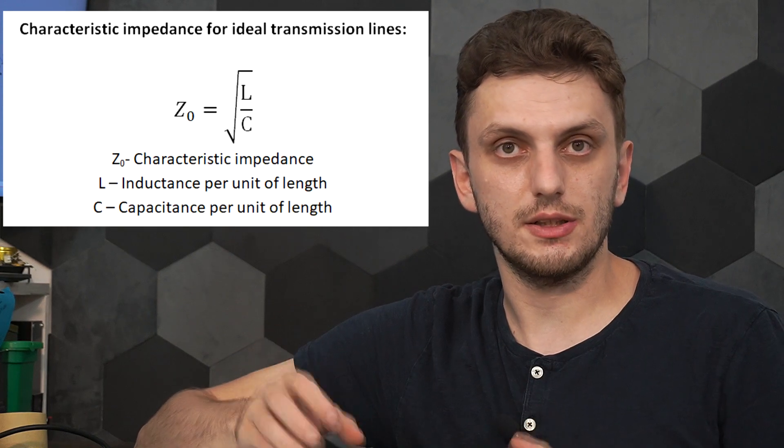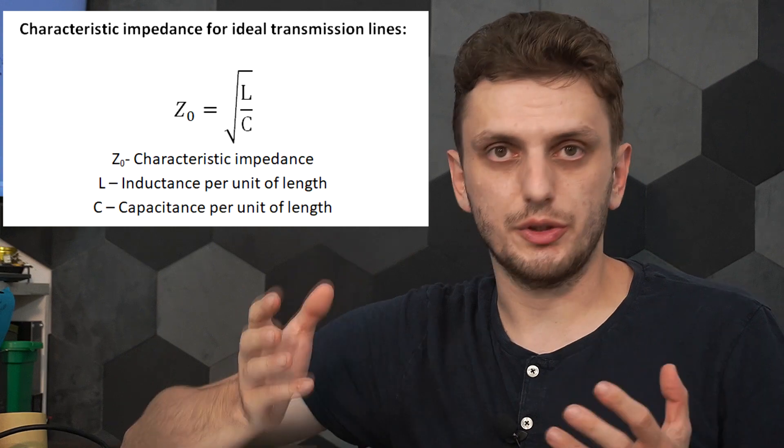The second parameter to consider when talking about transmission lines is characteristic impedance. The characteristic impedance of a transmission line is defined as the ratio of voltage to current that appears when a signal is applied to the line during the transmission delay — before the signal reaches the end. For that period, regardless of what is at the end of the line, the line acts like a load equal to the characteristic impedance. For an ideal transmission line, characteristic impedance is the square root of inductance per unit length divided by capacitance per unit length. A transmission line has both inductance and capacitance, and you can model it as a series of inductors and capacitors.